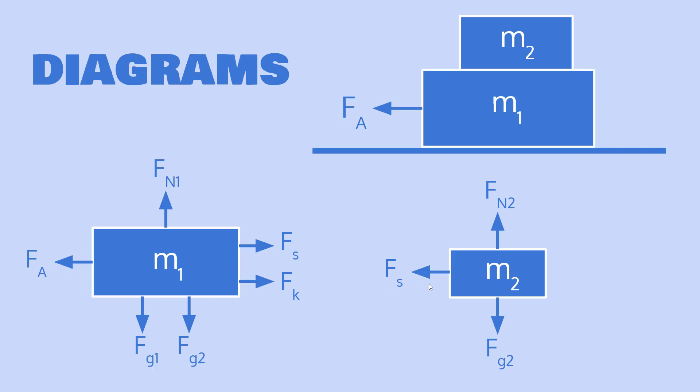It also makes sense that the static friction on the top block is in the same direction as the applied force, because this friction is what causes the top block to move. When you push the bottom block, both blocks move together until you apply so much force that it overpowers the maximum static friction — at that point, the static friction is too small to accelerate the top block at the same rate as the bottom block, and the top block slides off.